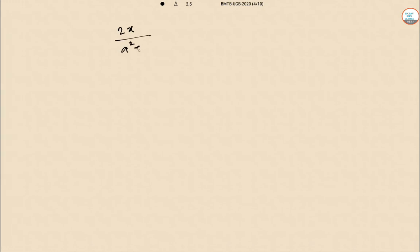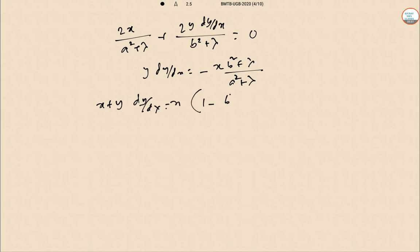So what we have here: 2x/(a²+λ) + 2y(dy/dx)/(b²+λ) = 0. So y(dy/dx) is minus x times (b²+λ) divided by (a²+λ). Once it is done, then x + y(dy/dx) equals x times 1 minus (b²+λ)/(a²+λ), which equals x times (a²-b²)/(a²+λ).